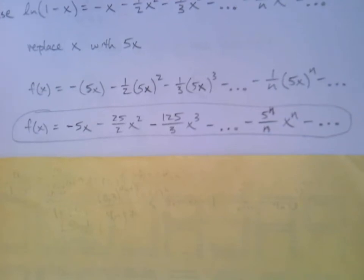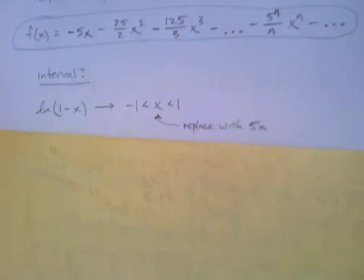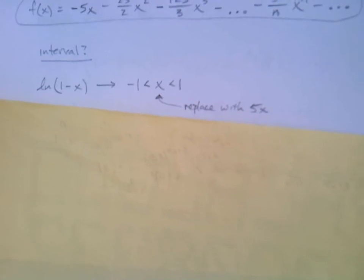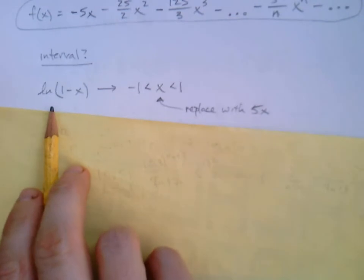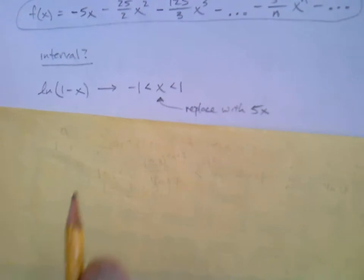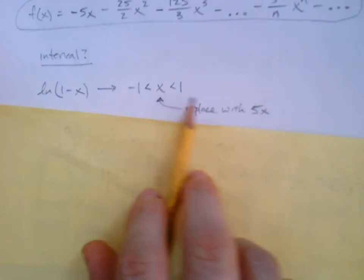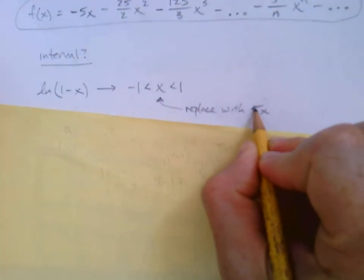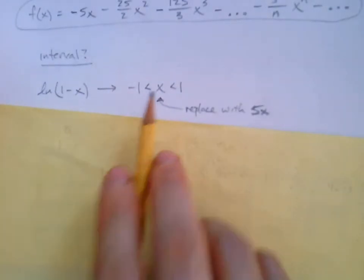Of course, we want the interval of convergence. There's a little bit of thinking here. Look at the interval for the natural log of 1 minus x. It's x between negative 1 and 1. But we're going to do the same thing we did when we found the series. We replace x with, in this case, 5x. So I'm going to put a 5x right there to get started.